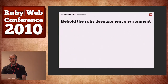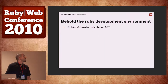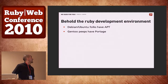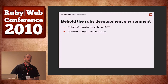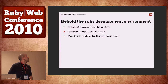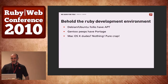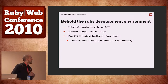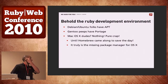So here it is — what I think should be a perfect development environment. The cool thing is Debian folks have apt. Gentoo folks have portage, which is to me one of the best package managers. And then Mac OS X people — nothing, pure crap — until Homebrew came along to save the day. And it really is the amazing package manager for OS X.